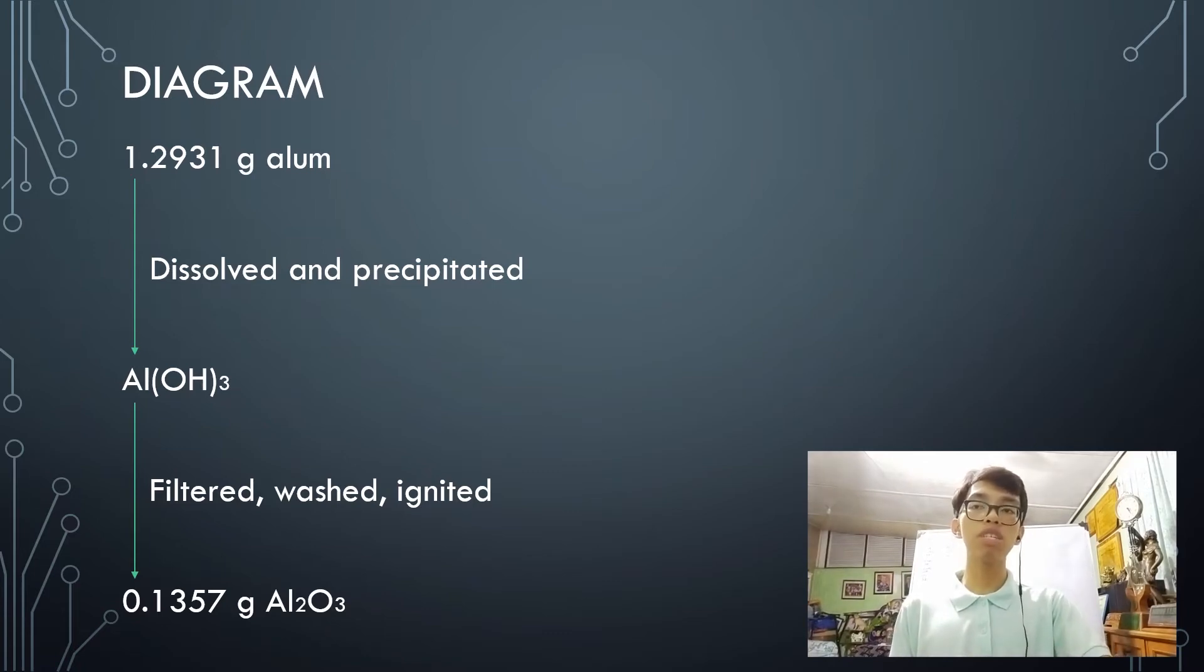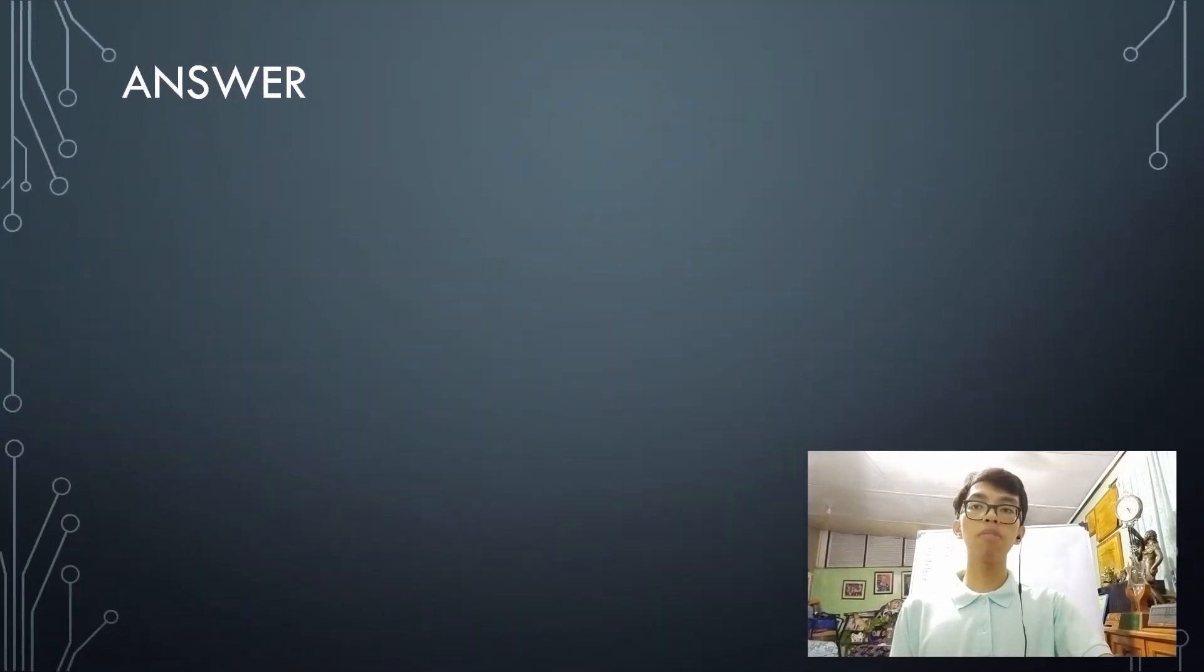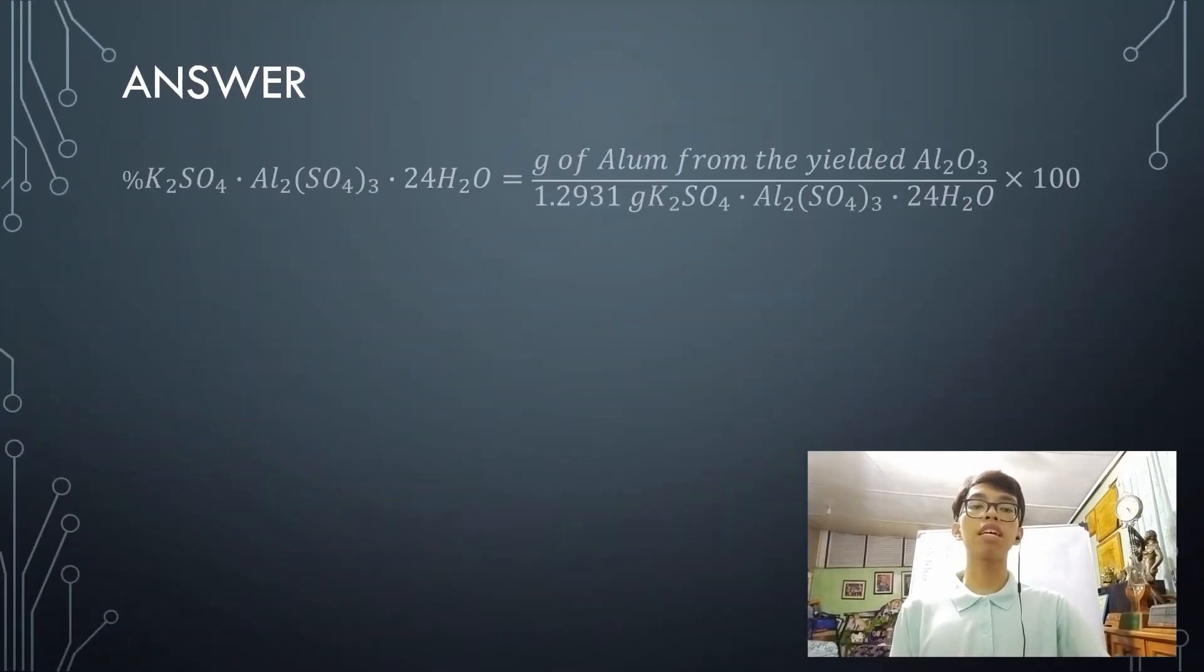So, how will we solve this problem? Now, the problem basically calls for the percent of alum that was yielded. The purity of the alum is in question. So the way that you're going to solve that is by this equation. You're going to solve for the gram of alum from the yielded aluminum oxide and divide it by the initial amount, which is 1.2931 grams of alum and multiply it by 100.